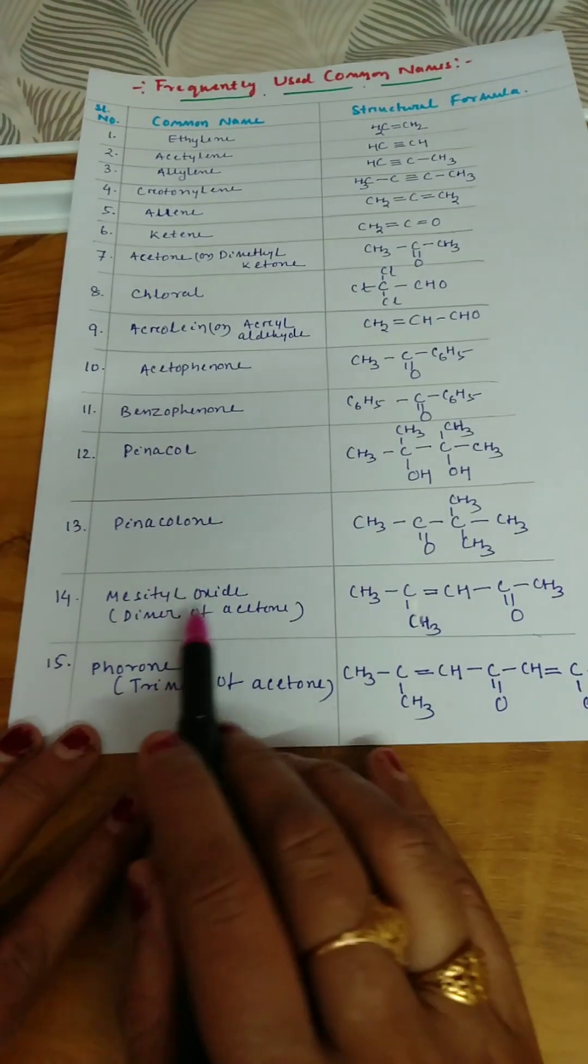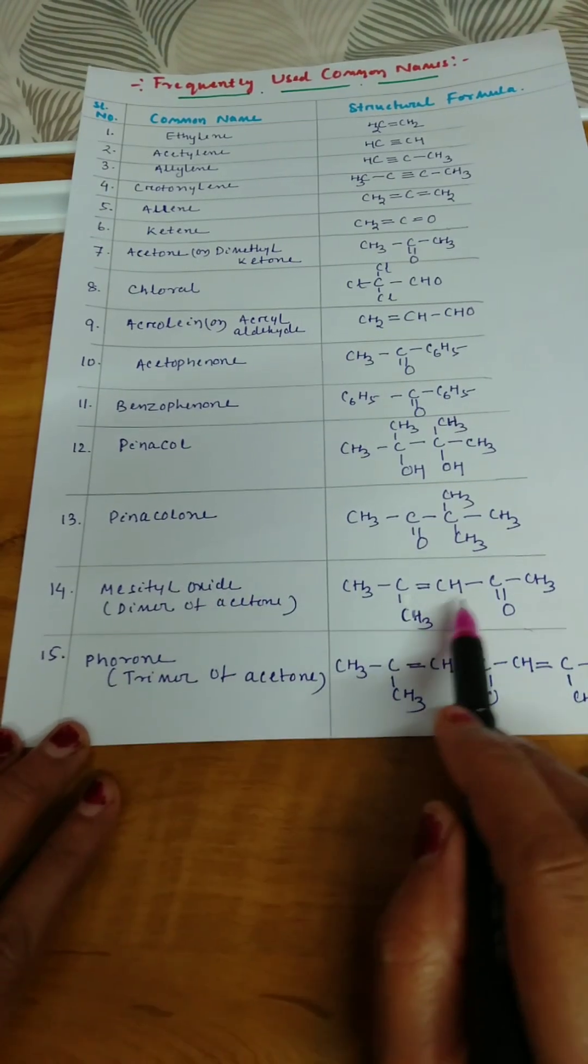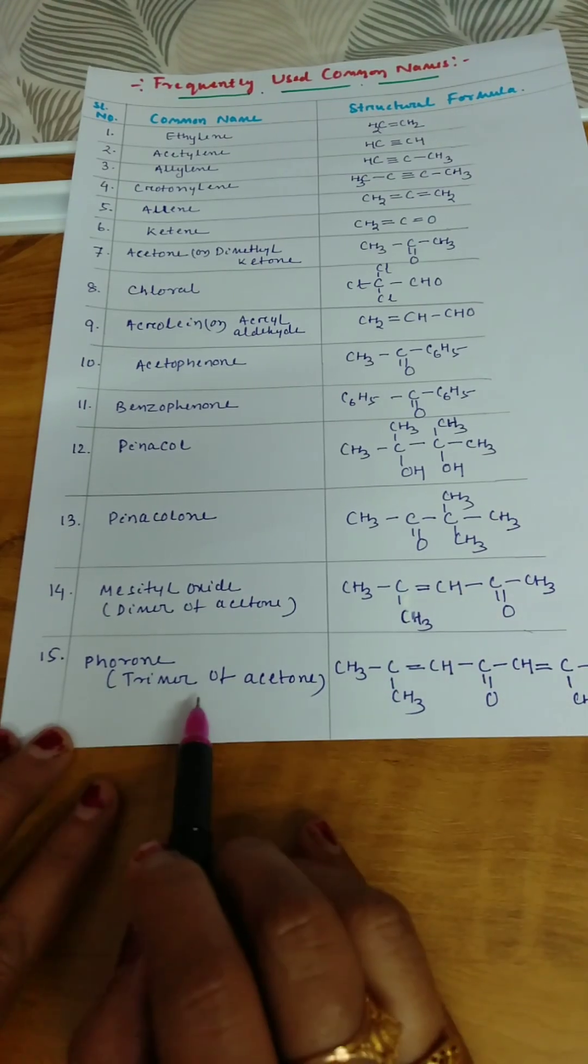Magetal oxide is the dimer of acetone. Two acetone molecules combine to form magetal oxide - this is one acetone, this is one acetone combined. Forone is known as your trimer of acetone. Three molecules of acetone combine to form forone.